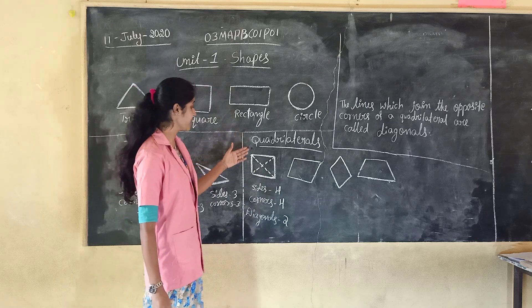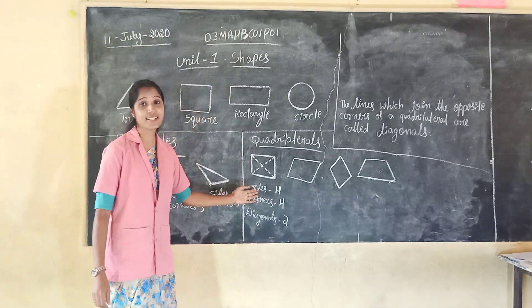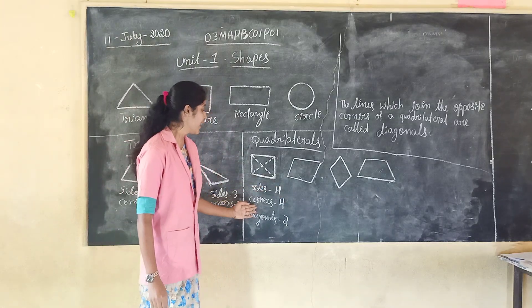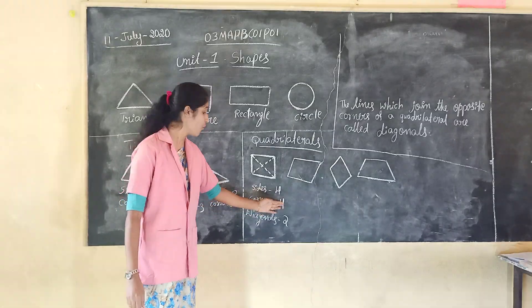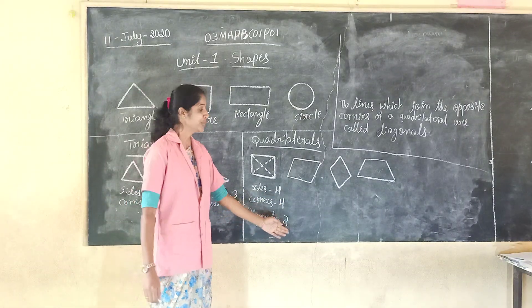Understood? Quadrilateral has how many sides? Four sides. And corners? Four. And diagonals? Two.